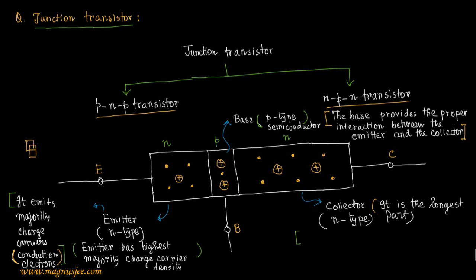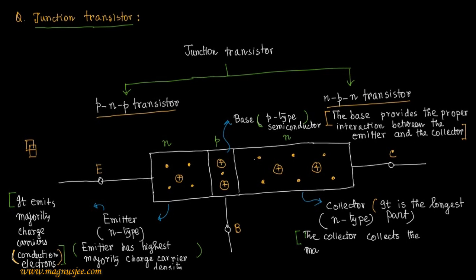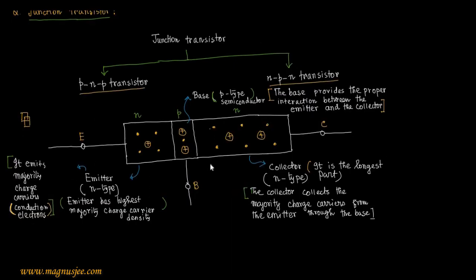Now we can explain the function of the collector. The collector is N-type in an NPN transistor. The collector collects the majority charge carriers coming from the emitter through the base. Specifically, the N-type collector collects the conduction electrons — the majority charge carriers — coming from the N-type emitter through the P-type base. That is the function of the collector.